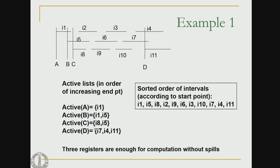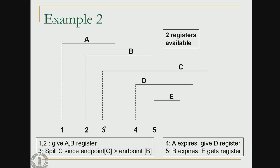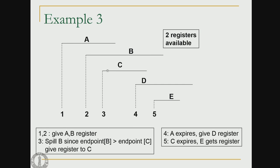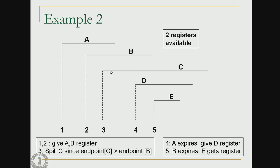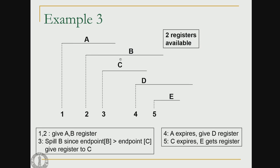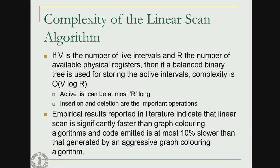If none of the intervals in the active list end later than i — meaning i itself ends much later — then we banish i itself to memory with a new stack location. That is how spill_at_interval works. In one example we took away the register given to b and banished it to memory while c got the register; in the other example, the incoming interval c had an end point greater than the others, so c was sent to memory while those two retained their registers.